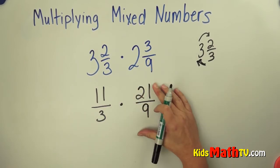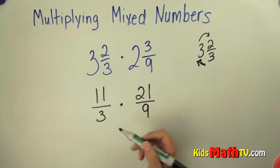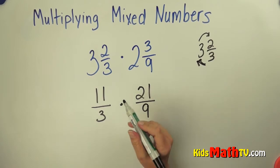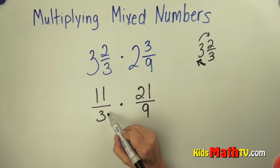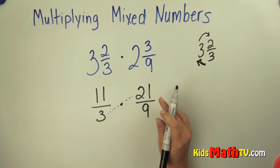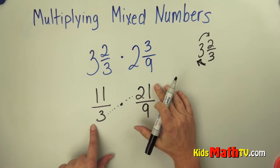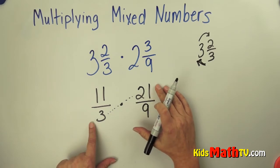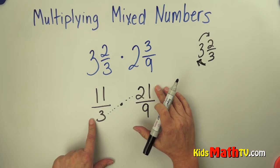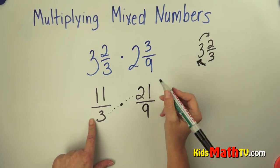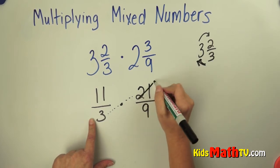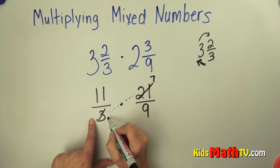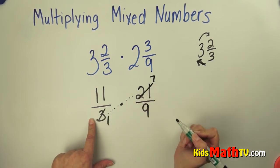Now I simply have multiplying of fractions, and I'm going to look to see if I can do any cross canceling. I look at 3 and 21 — they're across from each other. Can I simplify? Yes, I can divide both 3 and 21 by 3, giving me 7 and 1.